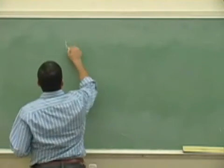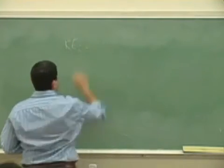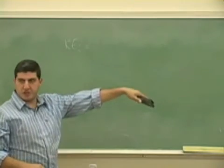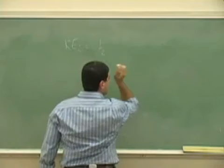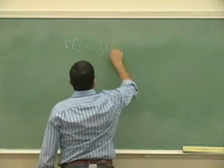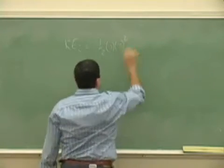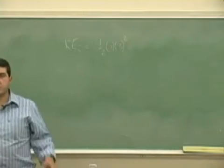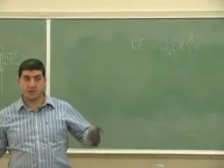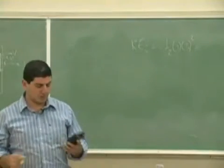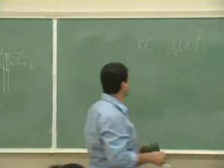The initial kinetic energy is the incoming object, which was half times its mass times its velocity squared. So, the initial kinetic energy of the system, half 2 times 3 squared. The ruler didn't have any velocity initially. So, that one is 9 joules, right?